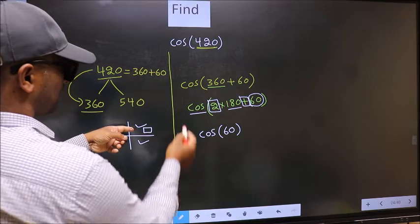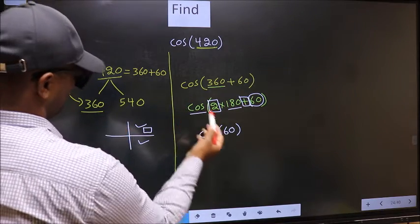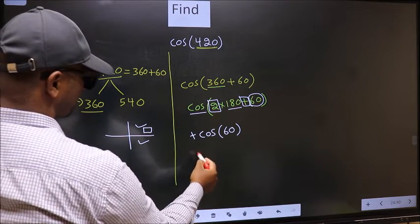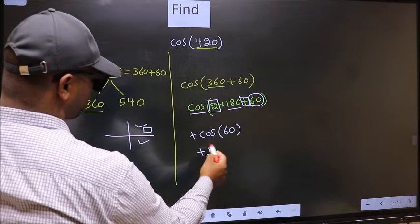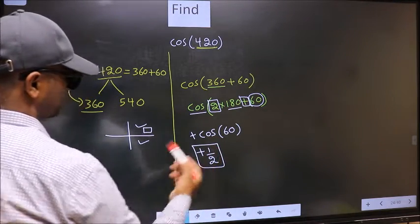And in the first quadrant, cos is positive. So we should put plus. So plus cos 60 is 1 by 2. This is our answer.